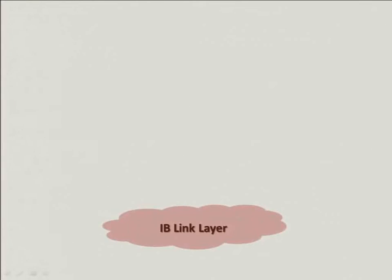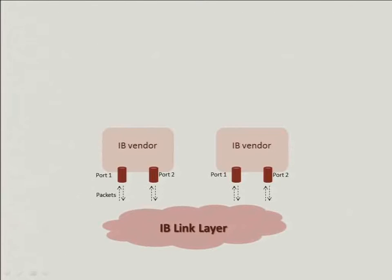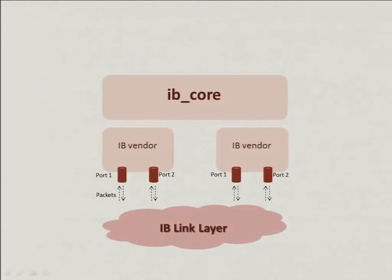A quick overview of how the driver works. We have our InfiniBand link layer — we refer to InfiniBand as IB. Above that we have our IB vendors with ports and traffic going in and out. Above the vendors we have our IB core. The application sits above the IB core, chooses the vendor it wants to work with, and sends requests to the IB core using its API. The IB core gets these requests and, according to the vendor chosen, calls the right callback in the right vendor, which goes down to firmware and to the link layer.